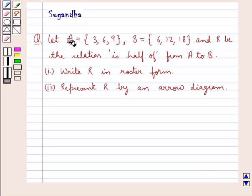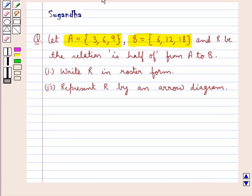Let A be equal to the set containing elements 3, 6, 9. Let B be equal to the set containing elements 6, 12, 18. And let R be the relation 'is half of' from A to B.